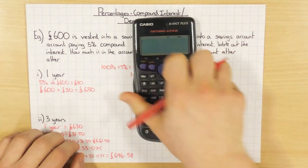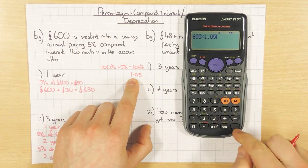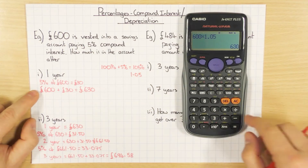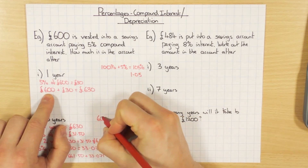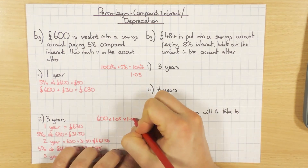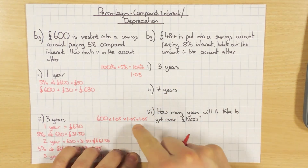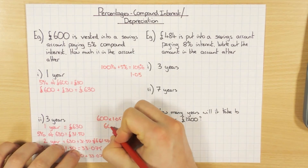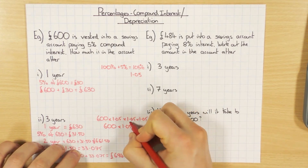So for year one, all I do is 600 times my multiplier 1.05, and I get 630. When you do it for three years it's a bit nicer, because I do 600 times 1.05 three times — once for each year — which increases the amount by 5% each time. That simplifies to 600 times 1.05 cubed.